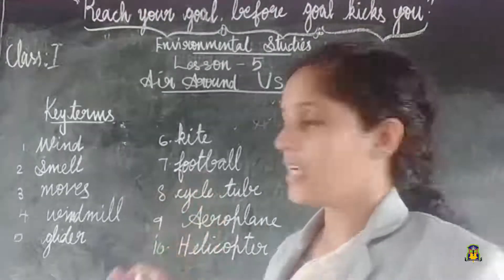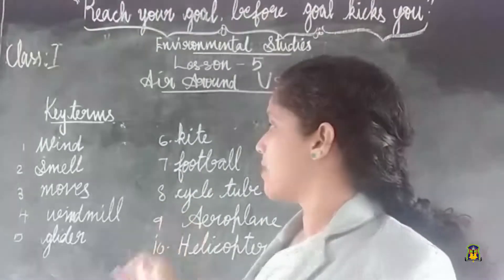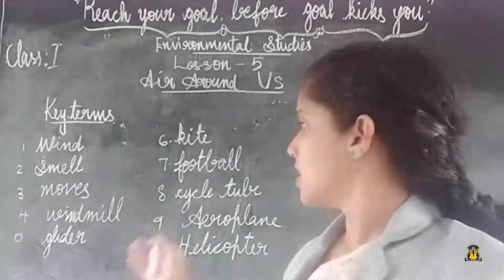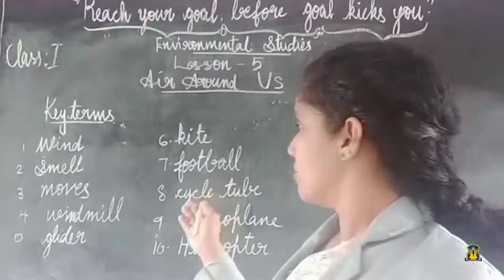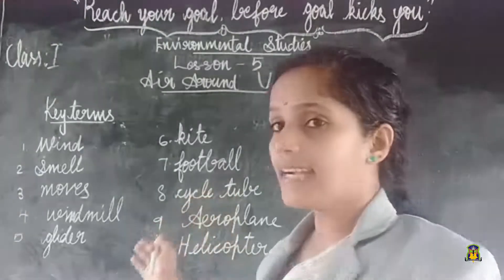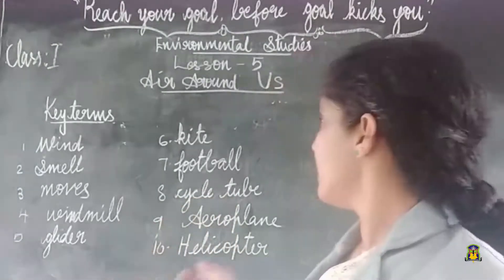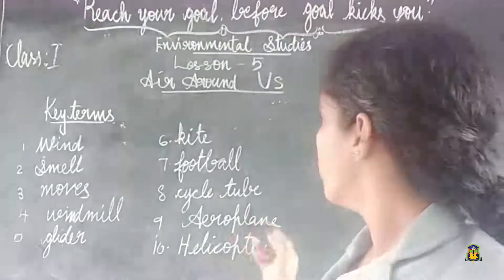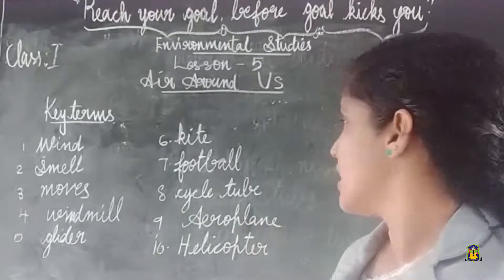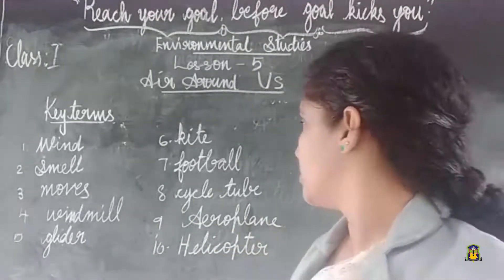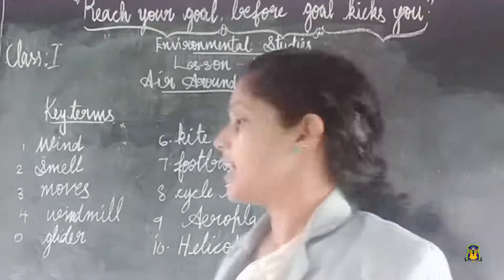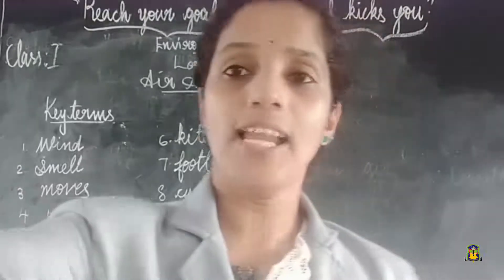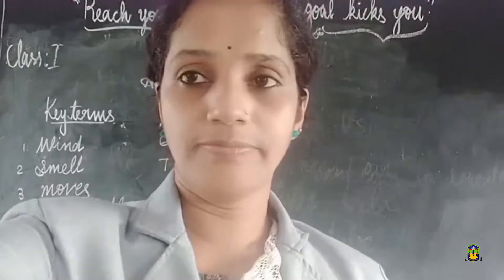Review of all key words: wind, smell, moves, windmill, glider, kite, football, cycle tube, aeroplane, helicopter.